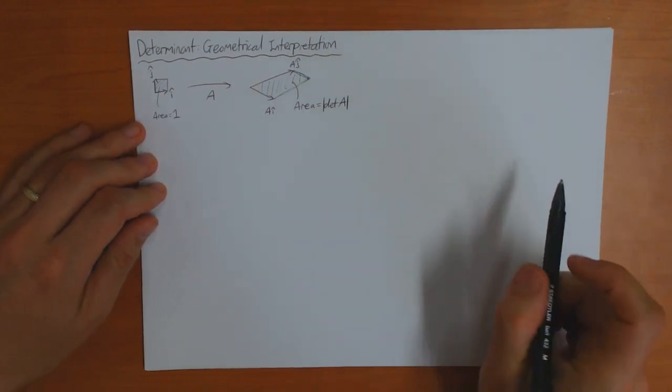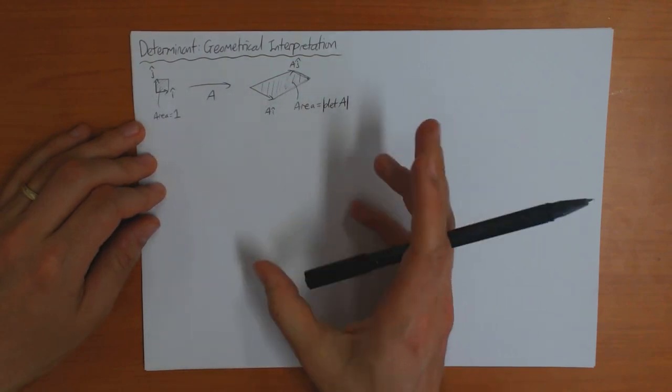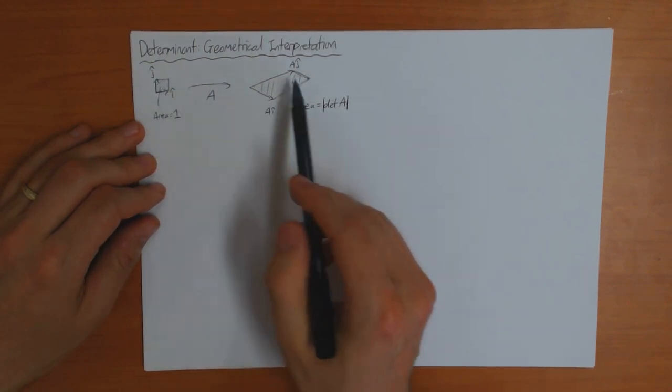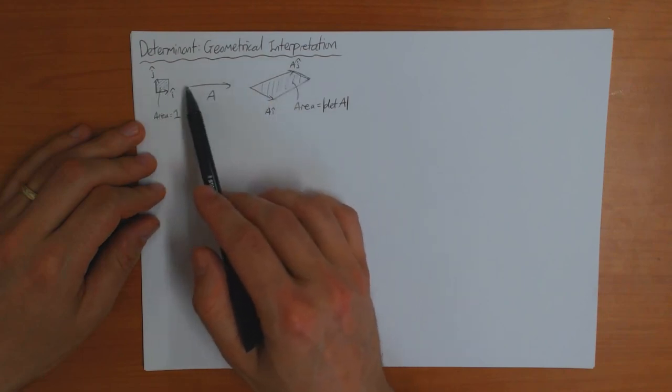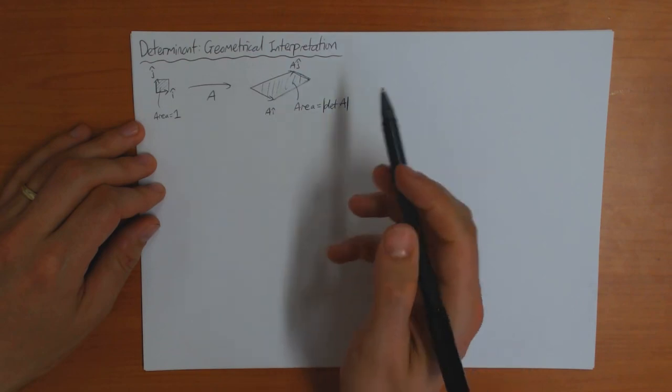Now this turns out to be true for any dimension, as long as you replace area with volume. The determinant tells you by how much, by what factor, does the transformation A change the volume of the space.